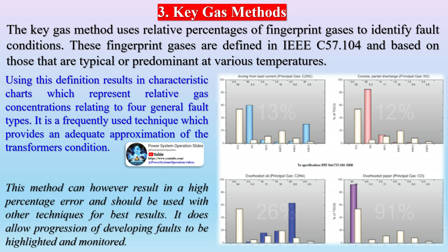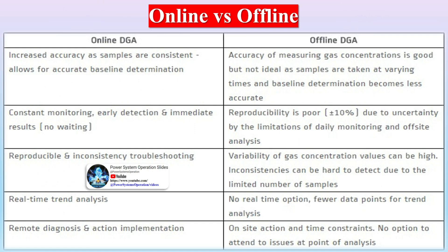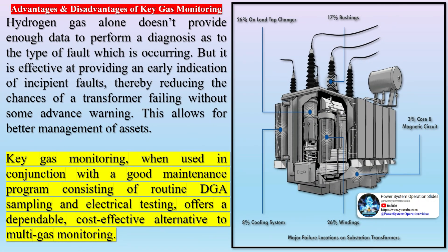The key gas method uses relative percentages of fingerprint gases to identify fault conditions. These fingerprint gases are defined in IEEE C57.104 and are based on those that are typical or predominant at various temperatures. Using this definition results in characteristic charts which represent relative gas concentrations relating to four general fault types. It is a frequently used technique which provides an adequate approximation of the transformer's condition, though it can result in a high percentage error and should be used with other techniques for best results.